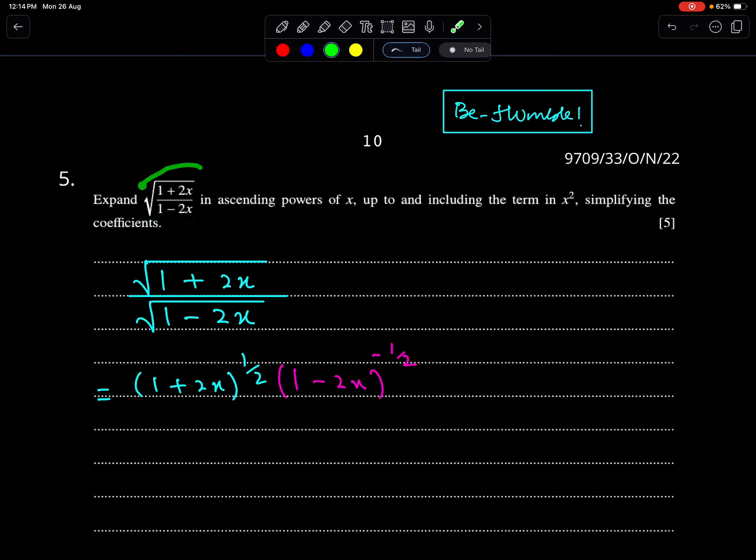In order to expand this expression, first we need to distribute the square root to both expansions like this: square root of (1 plus 2x) over square root of (1 minus 2x). Now bring this square root in the numerator. So when we bring this in the numerator, it will become (1-2x) to the power minus 1/2. And this will become (1+2x) to the power 1/2.